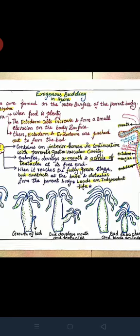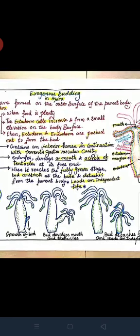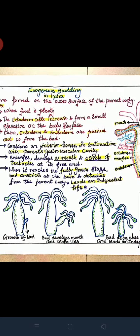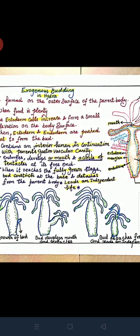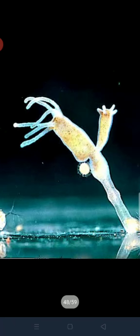To recap: buds are formed on the outer surface of the parent body in hydra. When food is plentiful, outer ectodermal cells increase and form a small elevation. The ectoderm and endoderm are pushed out to form the bud, which contains an interior lumen continuous with the parent's gastrovascular cavity. The bud enlarges, develops a mouth and circle of tentacles, then detaches and leads an independent life.